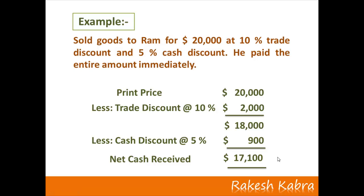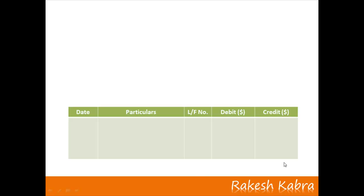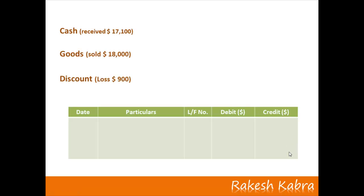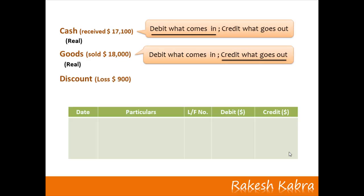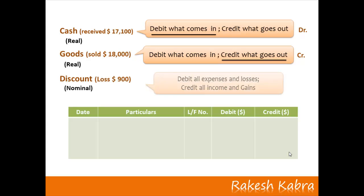To record this transaction, we identify the accounts affected: cash account, goods account, and discount account. Cash and goods are real accounts — the rule is debit what comes in, credit what goes out. Cash is coming in so cash account will be debited; goods are going out so goods account will be credited. Discount is a nominal account — the rule is debit all expenses and losses, credit all incomes and gains. Since discount is a loss for the business, discount account will be debited.